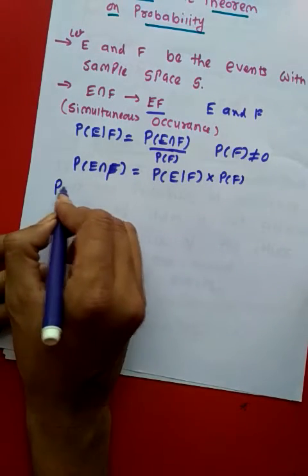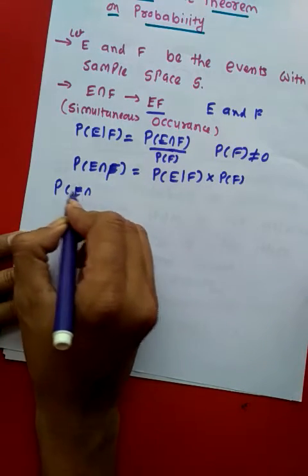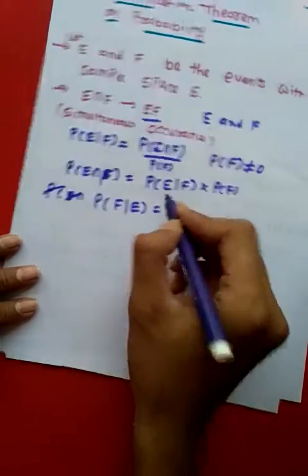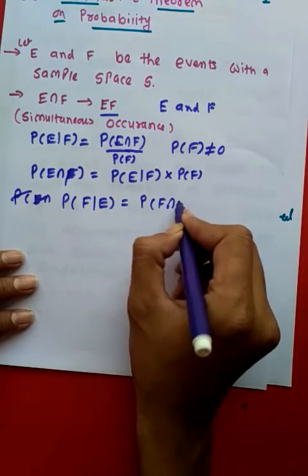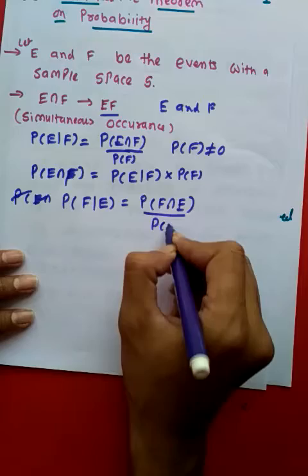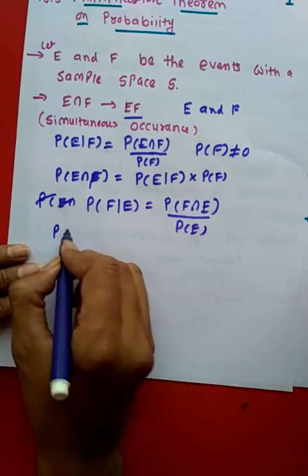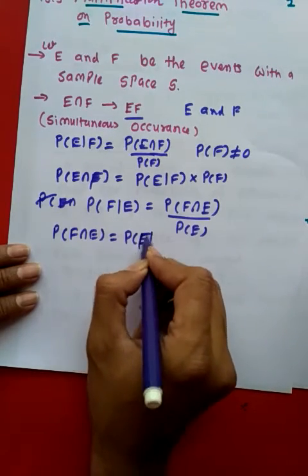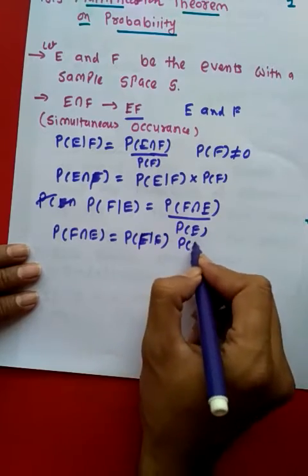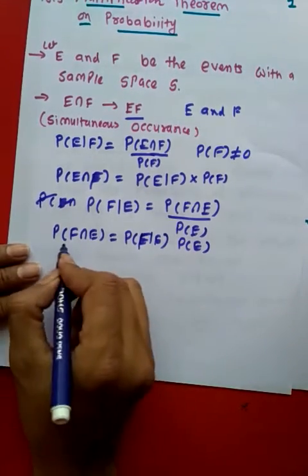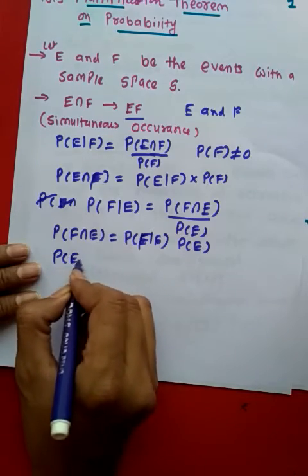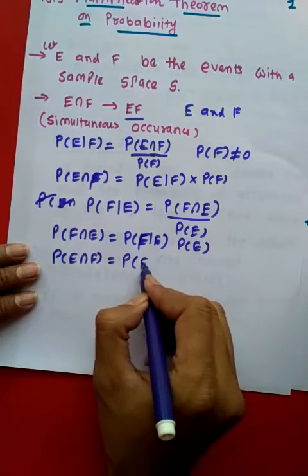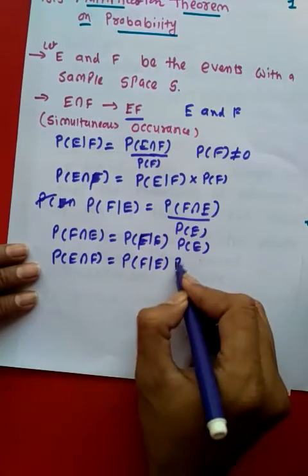Same way if I wish to write down P of F given E, then I can express it P of F intersection E divided by P of E. Again, if I will make the subject as P of E intersection F, then it is P of F given E multiplied with P of E. As we know, P of F intersection E or P of E intersection F, both have the same meaning. So I can write that P of F given E into P of E.